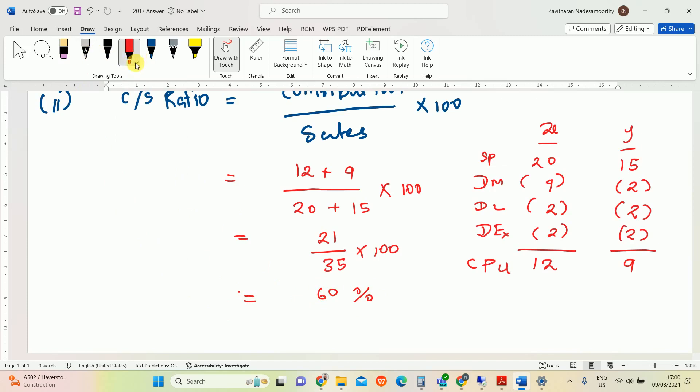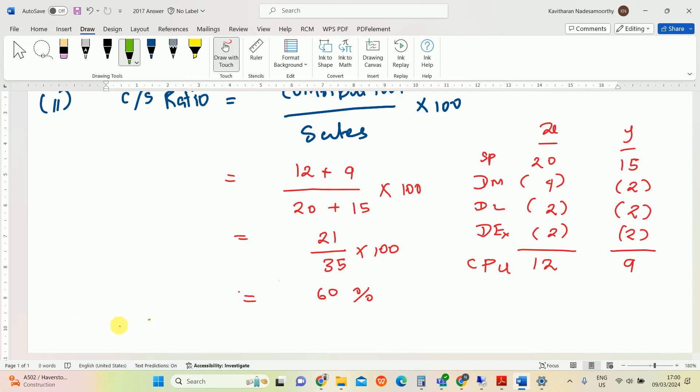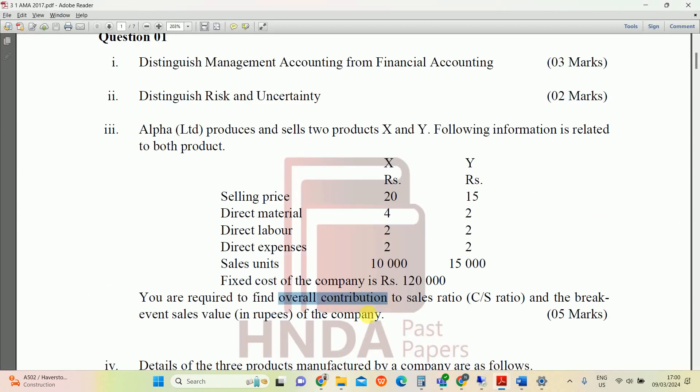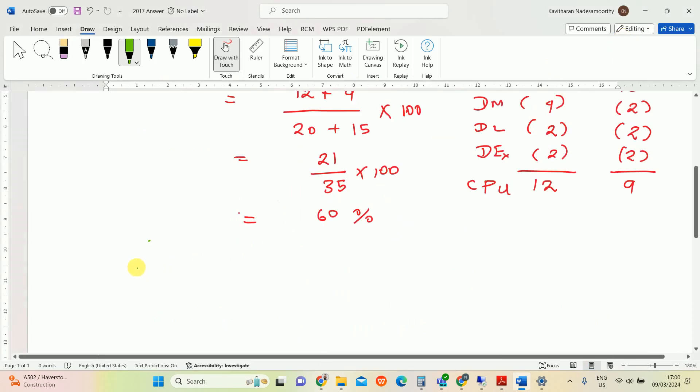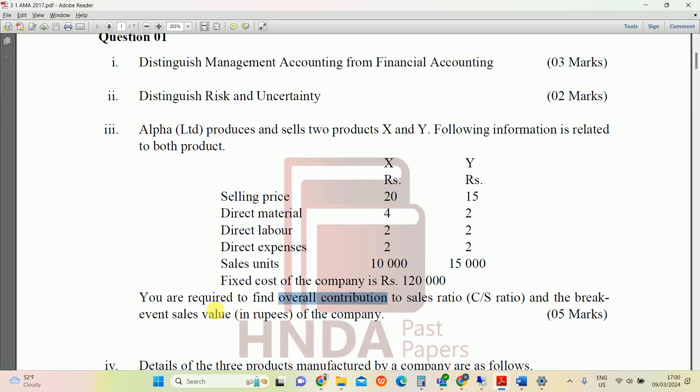Second question is: we need to calculate break-even point, break-even sales value in rupees. The equation is break-even sales value equals fixed cost divided by C/S ratio, that means combined C/S ratio. So as per the question paper, FC is already given, 120,000.